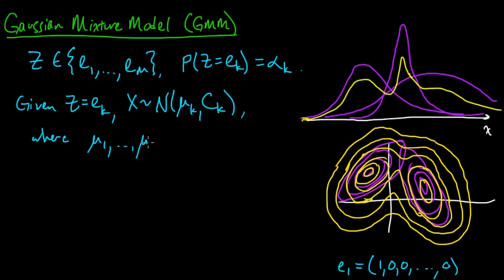the distribution of x will be normal with mean mu k and covariance Ck. Where mu1 to mu m are some d-dimensional real-valued vectors and C1 through Cm are d by d positive semi-definite matrices. Or in other words, they're d by d covariance matrices.